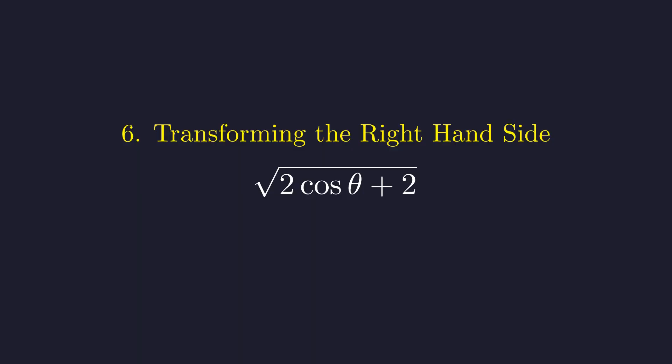This gives us the square root of 2 cosine theta plus 2. I can factor out the 2 from inside the square root. Now I have the square root of 2 times 1 plus cosine theta.